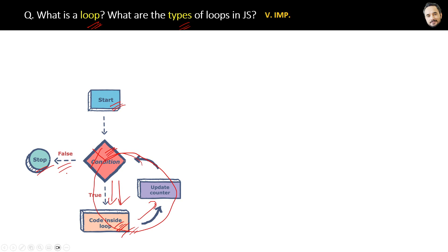Simple definition is: a loop is a programming way to run a piece of code repeatedly until a certain condition is met. In JavaScript we have four to five types of loops.